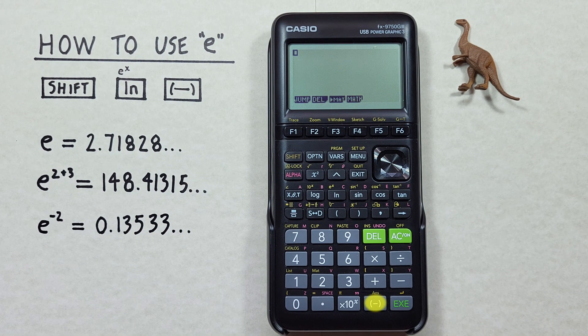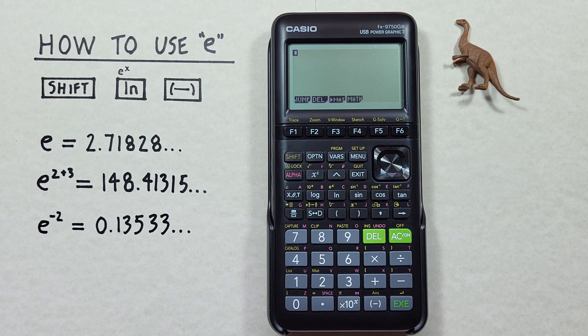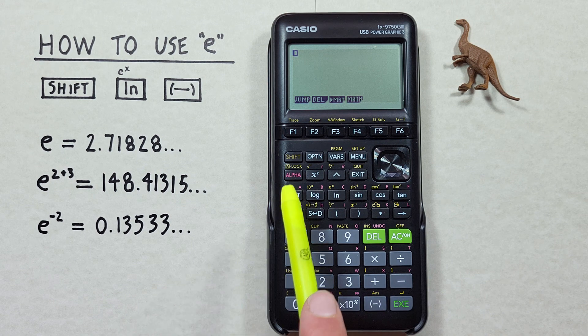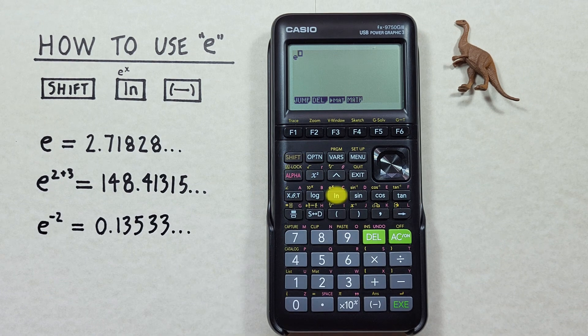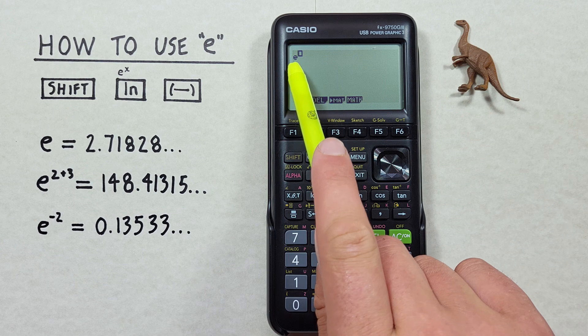To get started, if we just want to get E itself, or Euler's number on its own, what we do is press shift and then the ln key. We'll now see the E with an exponent box.